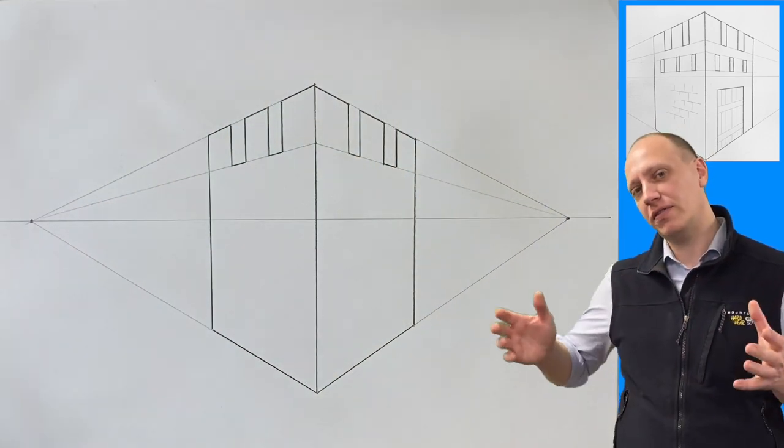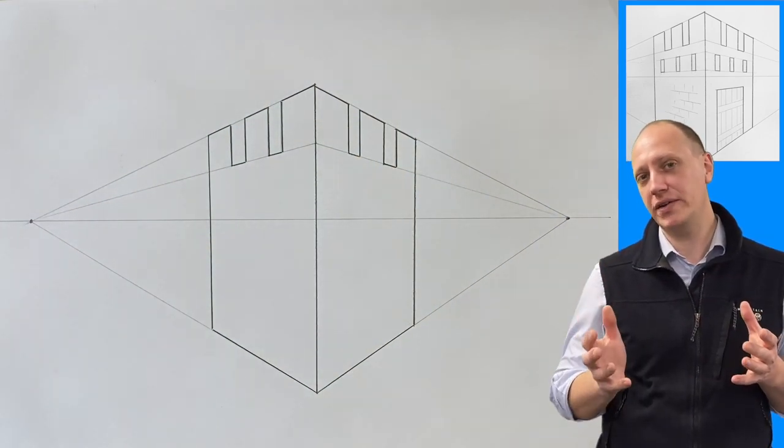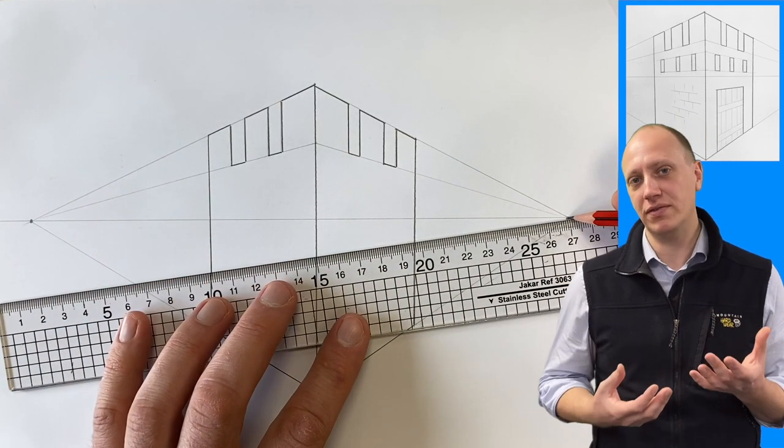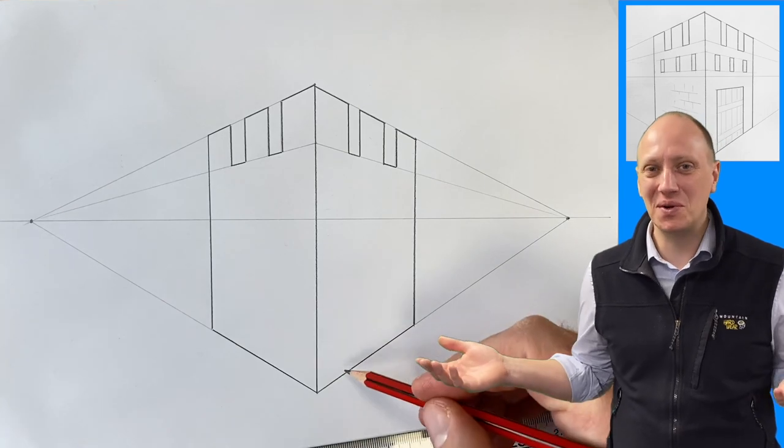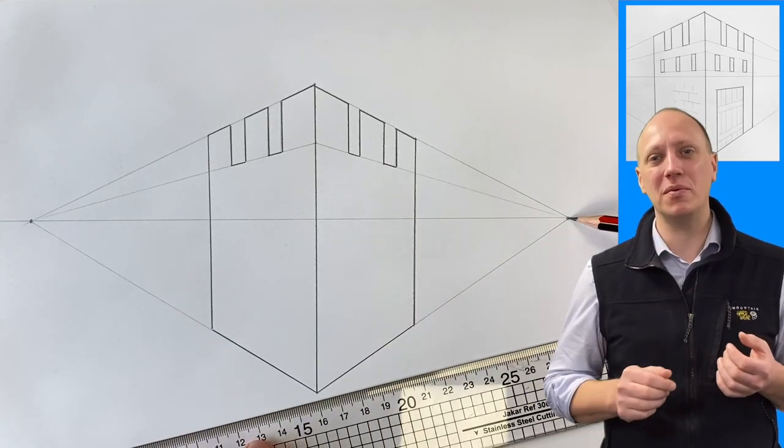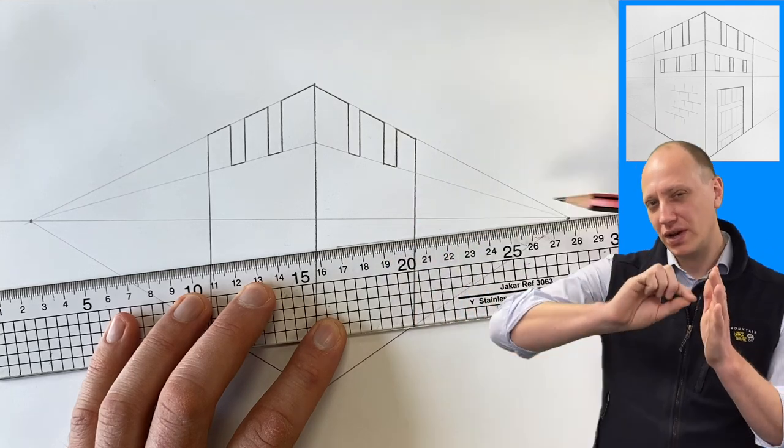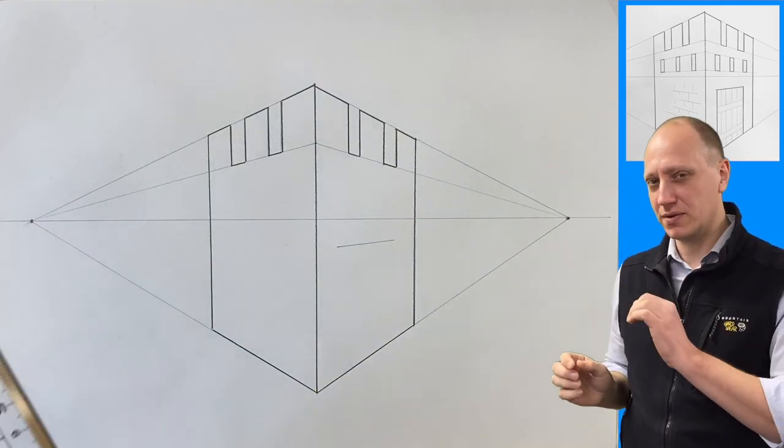And there we have the start of our tower. The outline is done. And the next thing we can do is start to add a few details to this. Now, of course, you're welcome to add different things, but I'm going to start with a door. And I'm going to make my door rectangular. It's not going to have an arch on it. That's more difficult to do.